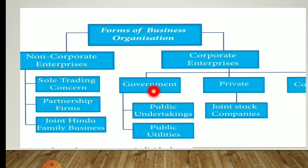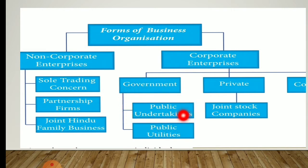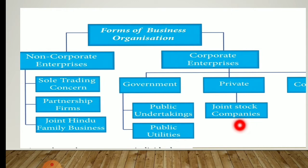Government sector is divided into public undertaking and public utilities. Government is always concerned with public, so everything will be controlled by the government sector. The private sector has a subdivision of joint stock companies, which can be divided into private companies and public companies.